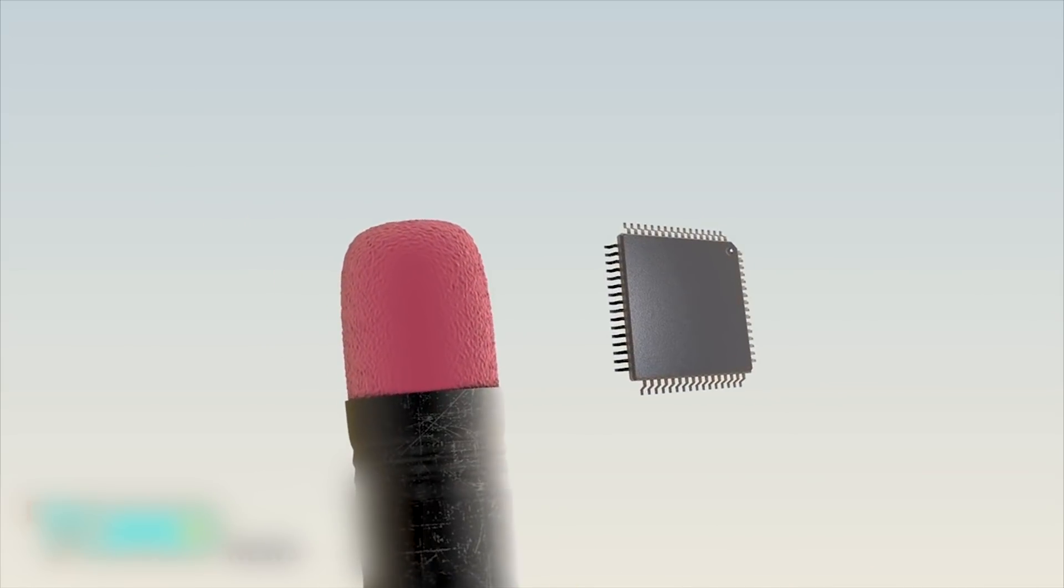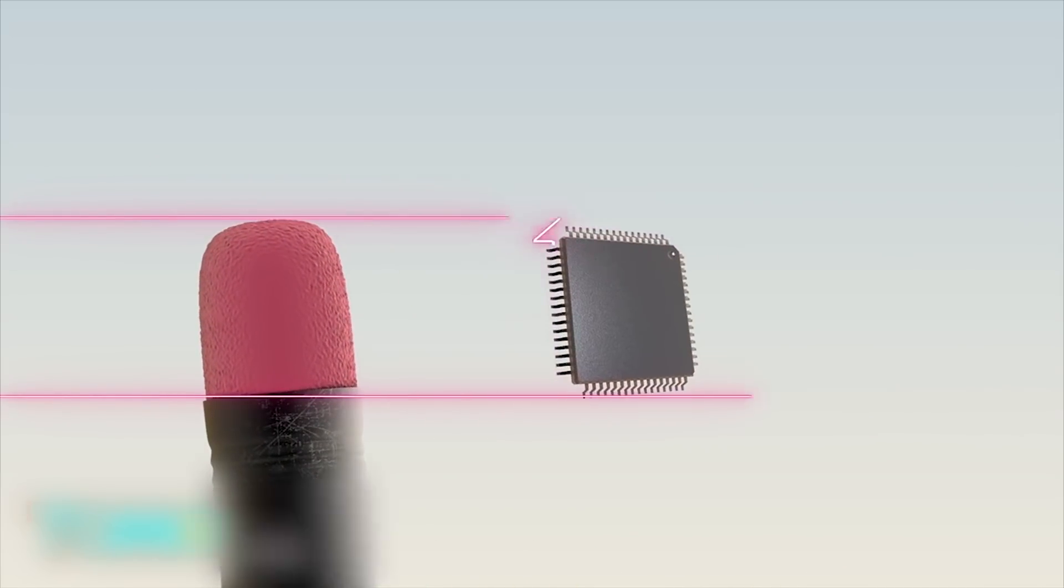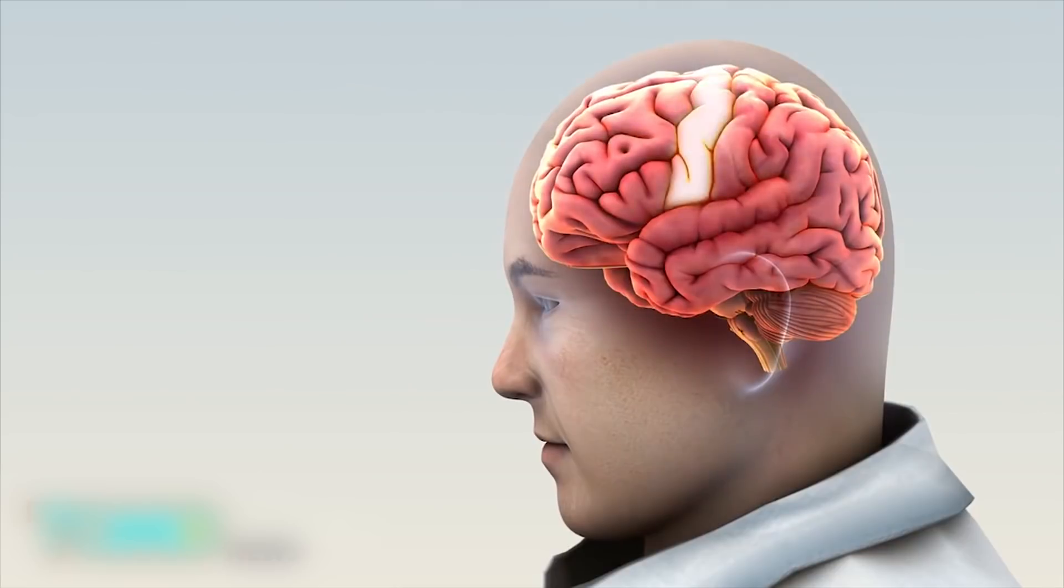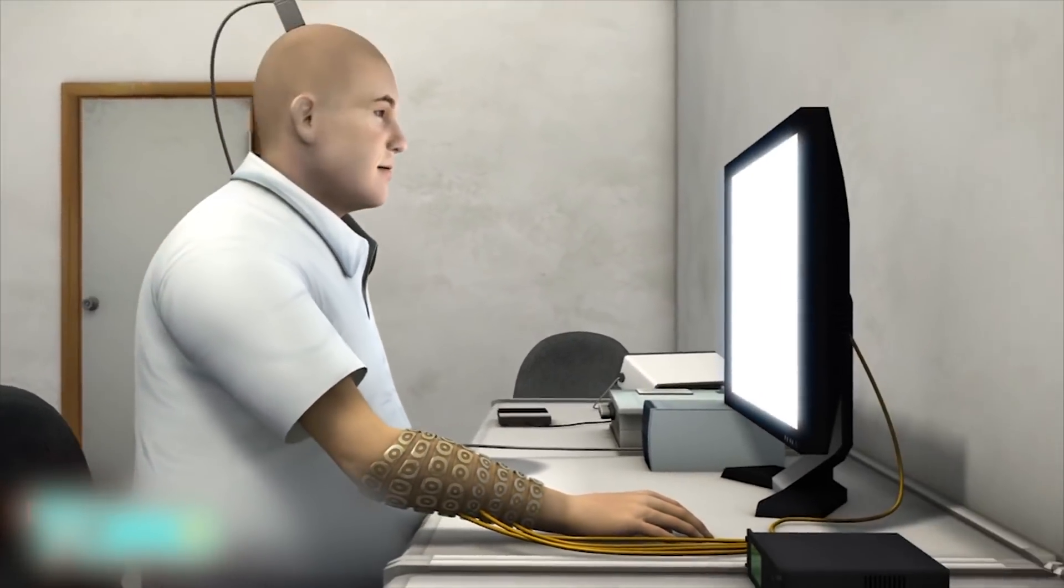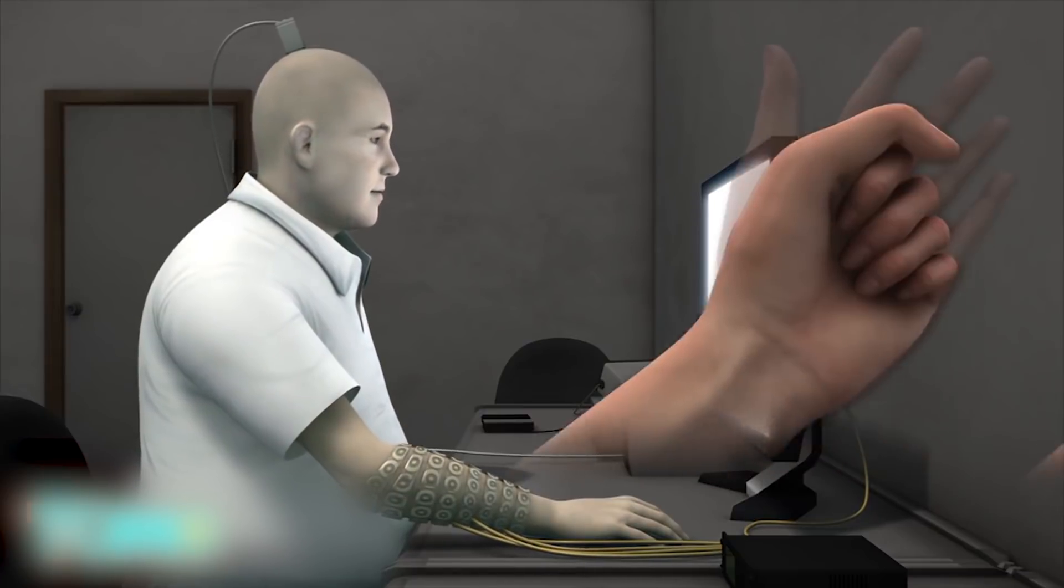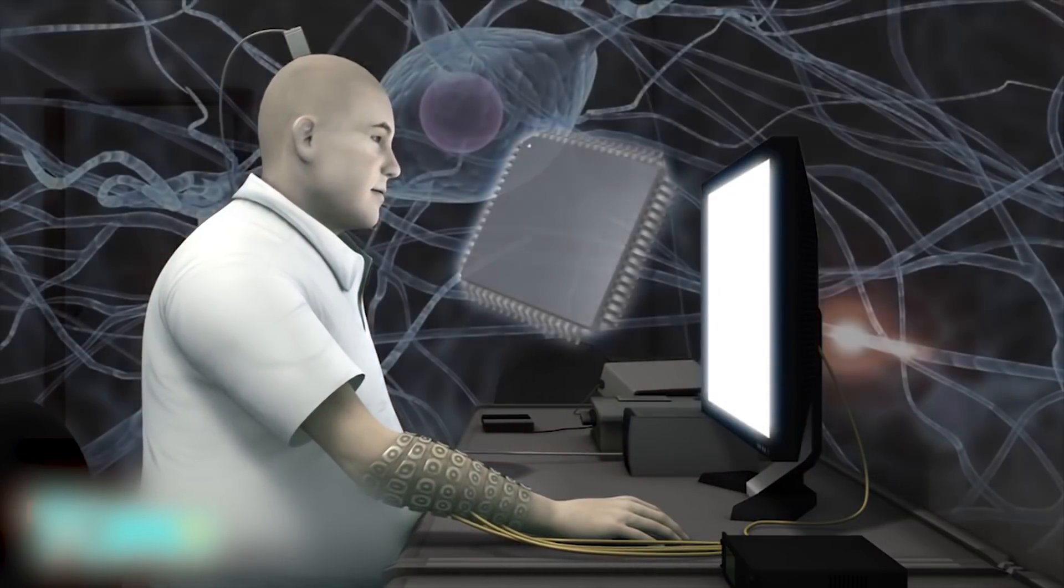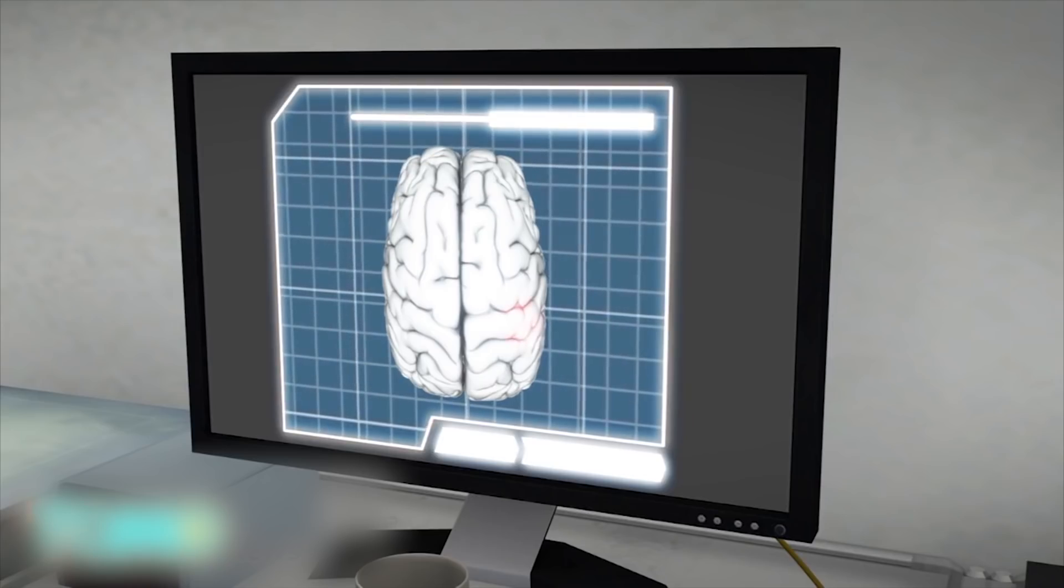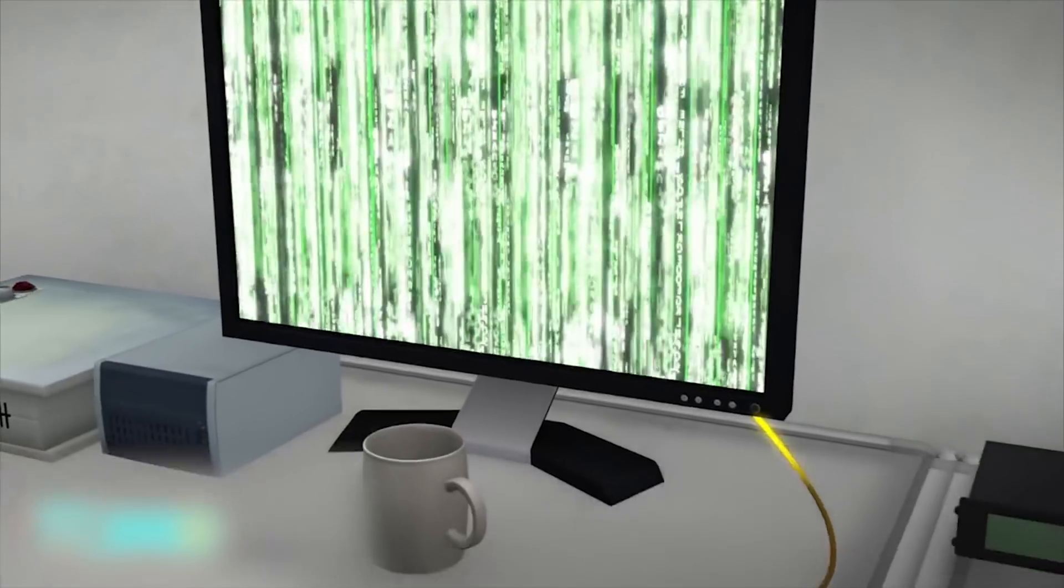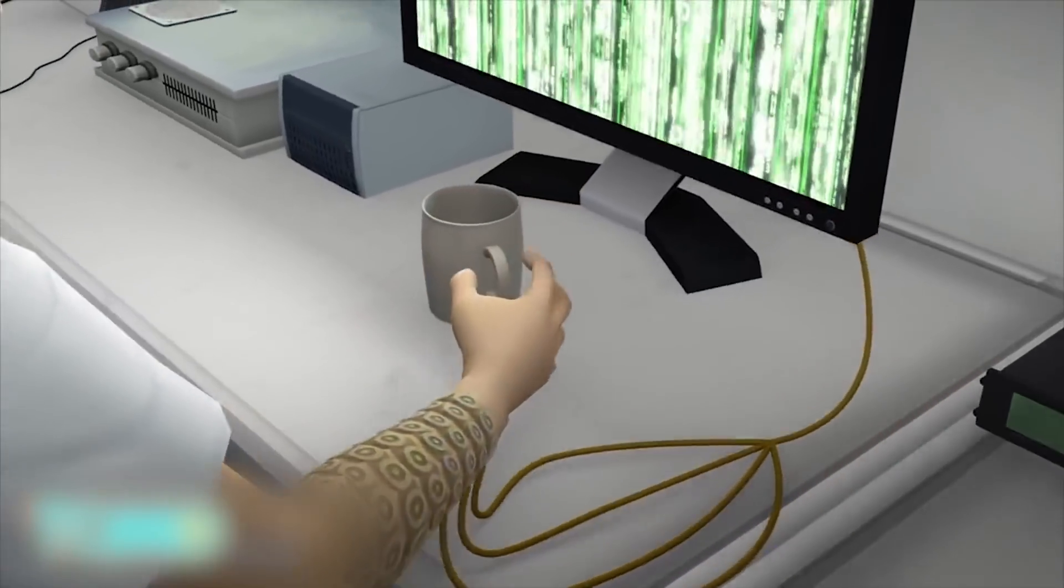To help him, doctors inserted a chip the size of an eraser head into his motor cortex, the area of the brain that controls hand movements. The chip records brain signals for specific hand movements and sends these to a computer via a port on the back of Burkhart's head. Once the signals are decoded, they're transmitted to an arm sleeve studded with electrodes. The electrodes stimulate the muscles and allow them to move.